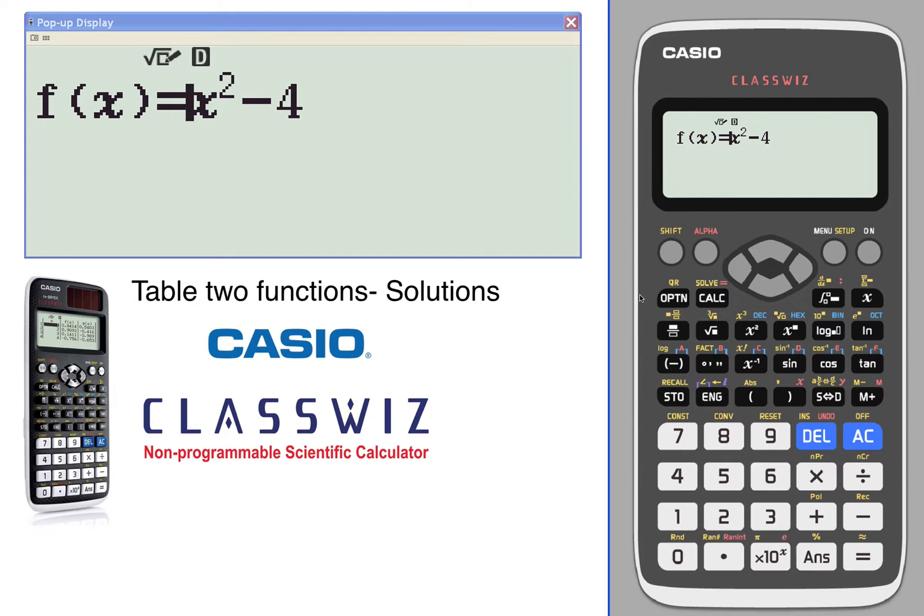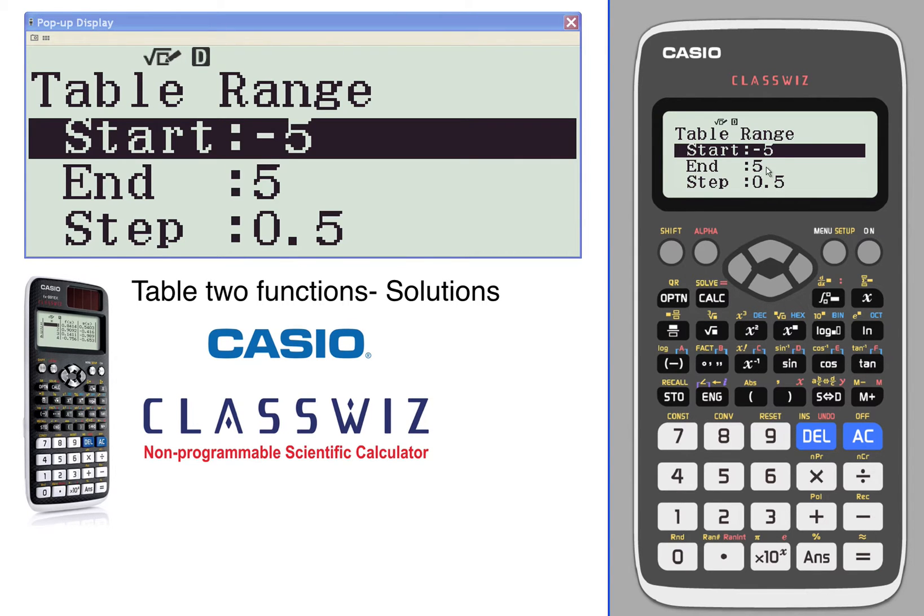Let's use our table or two function table to approximate solutions. We're going to start out with the equation f(x) = x² - 4. This is in the table feature. Second one will be our g(x), which is going to be x + 2.